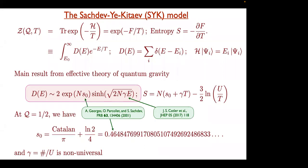For the Majorana case, s_0 becomes half the value, and the value of gamma will also change — you have to do a full computation to get gamma, but s_0 is exactly half as large.